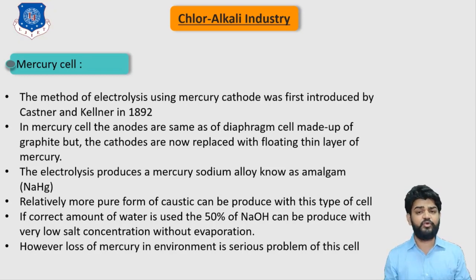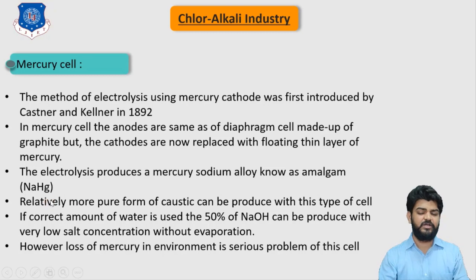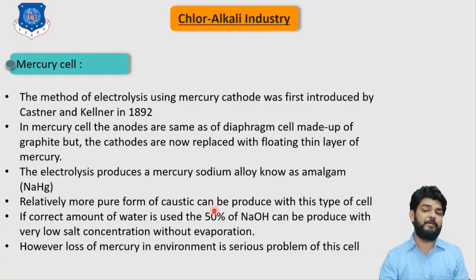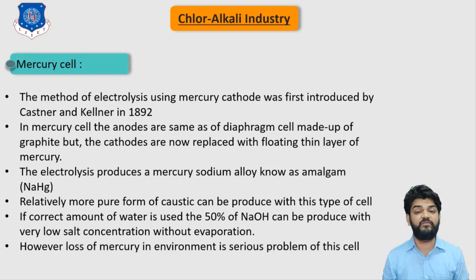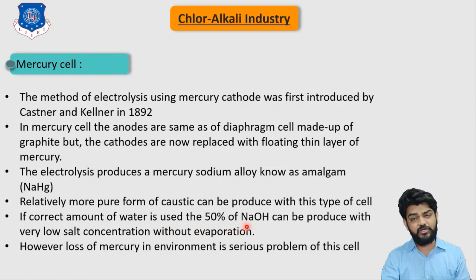Using floating mercury as the cathode, electrolysis produces mercury-sodium amalgam, known as NaHg. Relatively more pure caustic can be produced by this type of cell, and with the correct amount of water we can directly produce a 50% concentration aqueous NaOH solution. Only a very small amount of evaporation is required to remove residual salt.